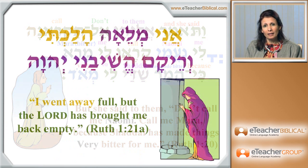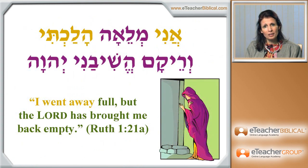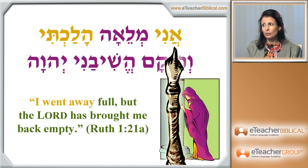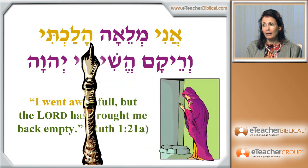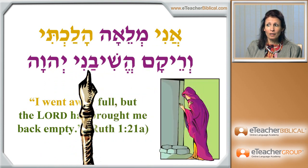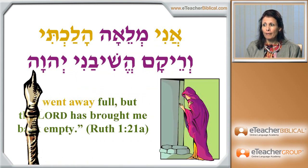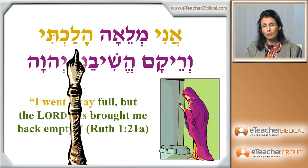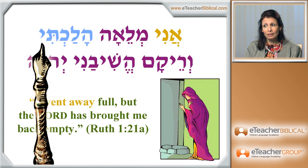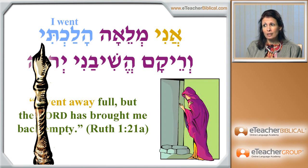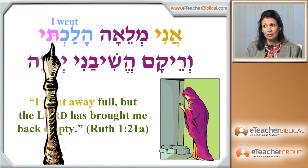Just a tiny additional verse to see, because we want to notice the katal verbal form. Ani mele'a halakhti, v'reikam heshivani Adonai. This is from root 121. Let us look for the verb — the verb is halakhti, which means 'I went.' That's a katal verbal form. We know that because it takes a suffix, and this suffix is 'ti'. We can find easily the subject at the end — 'ti' is 'I'.